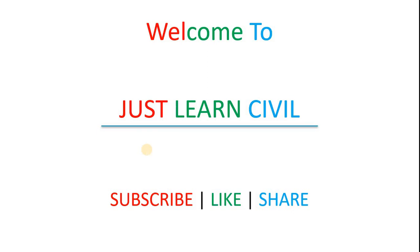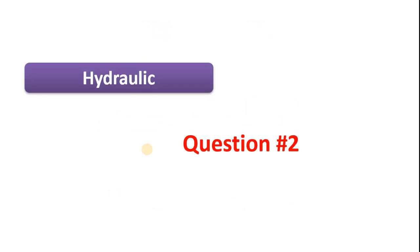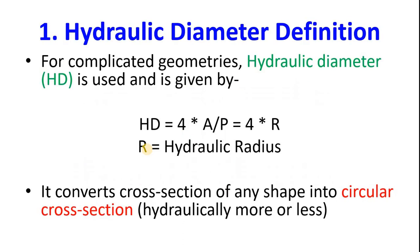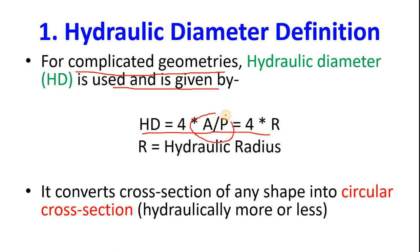Welcome to Just Learn Civil. This is the second tutorial in hydraulics — hydraulic diameter and geometric diameter. For complicated geometries like trapezoid and irregular shapes, hydraulic diameter is used and is given by four times the hydraulic radius. Hydraulic radius is A by P, as we already know from the previous tutorial. Hydraulic diameter converts any cross section — rectangle, trapezoid, any shape — into a circular cross section, hydraulically.